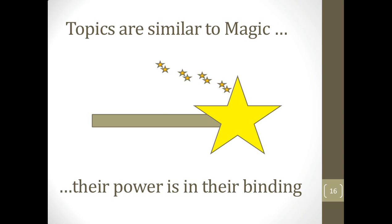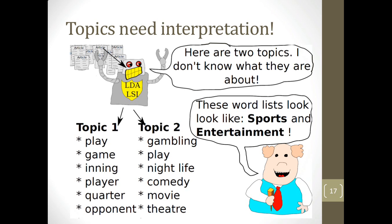These topics are similar to magic — their power is in their binding. A topic that has not been bound to a name doesn't have a lot of meaning. An unnamed topic needs to be interpreted. For example, topic one: play, game, inning, player, quarter, opponent, gambling — and topic two: play, nightlife, comedy, movie, theater. If you know they're labeled 'sports' and 'entertainment' that makes it easy, but otherwise you have to think and label them yourself. Furthermore, LDA knows nothing about the English language or actual concepts, so it can't label them either.